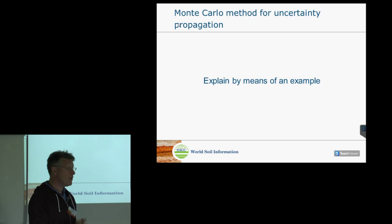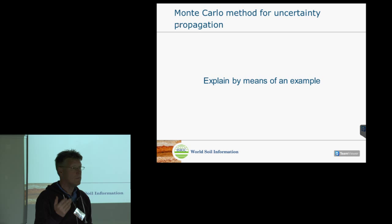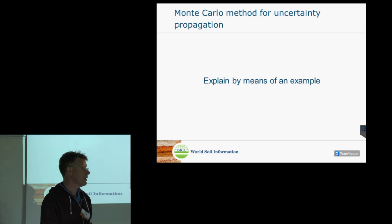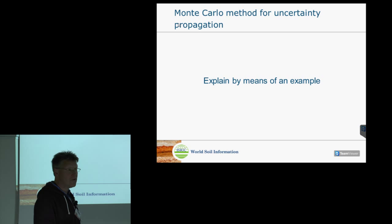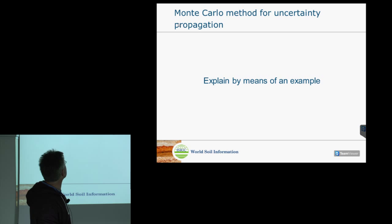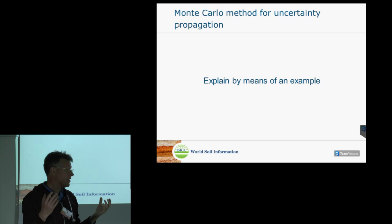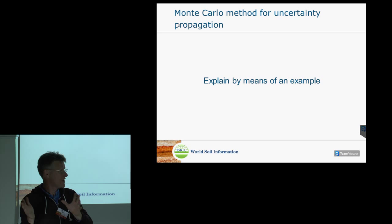The uncertainties in the inputs to these models will propagate through to the output. The goal of uncertainty propagation analysis is to calculate how uncertainty in model inputs propagates to the output. Two important techniques exist: the Taylor series approximation method — more analytical and mathematical — and the Monte Carlo method — more numerical using simulations. These two methods are somewhat complementary: where one is strong, the other is weaker. Literature on both methods, including a geostatistics and uncertainty reader from this university course, is provided in the course materials.